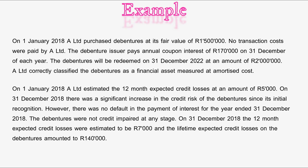Let's begin with our example. On the 1st of January 2018, A Limited purchased debentures at its fair value of 1.5 million rand. No transaction costs were paid by A Limited. The debenture issuer pays an annual coupon interest of 170,000 rand on the 31st of December each year. The debentures will be redeemed on the 31st of December 2022 at an amount of 2 million rand. A Limited correctly classified the debentures as a financial asset measured at amortized cost. On the 1st of January 2018, A Limited estimated the 12-month expected credit losses at 5,000 rand.